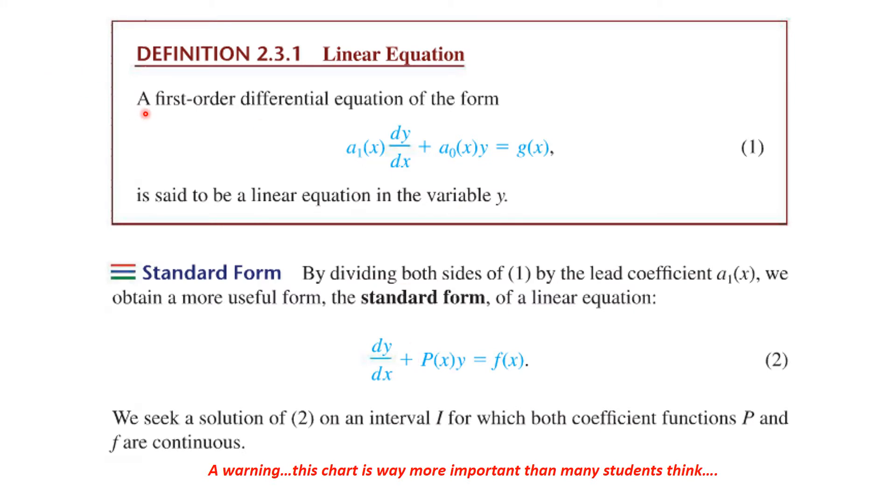A linear first order differential equation is of this form: a1 of x dy dx plus a0 of x y is equal to g of x. So it is linear in the variable y. Now, we have to put this in standard form, and there are two elements to putting this into standard form.